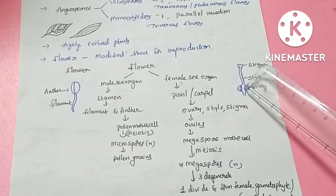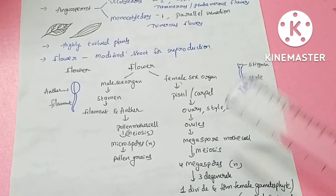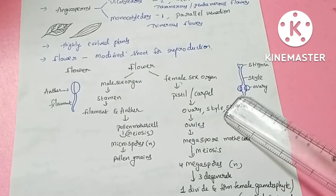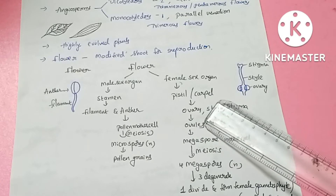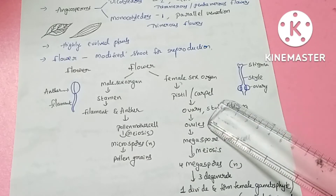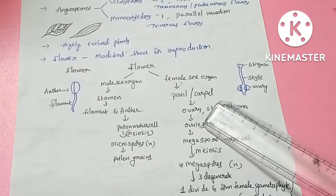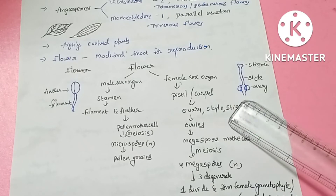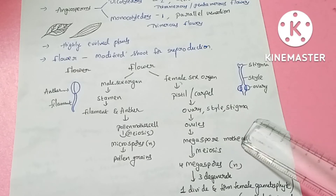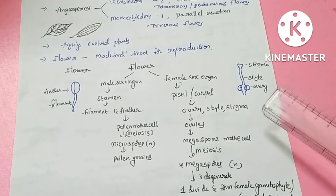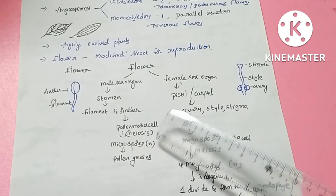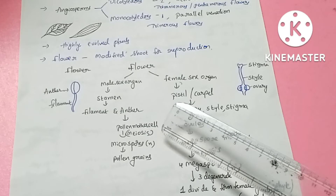Inside the ovary, there are small structures called ovules. The ovules contain the megaspore mother cell, while the anther contains the microspore mother cell.